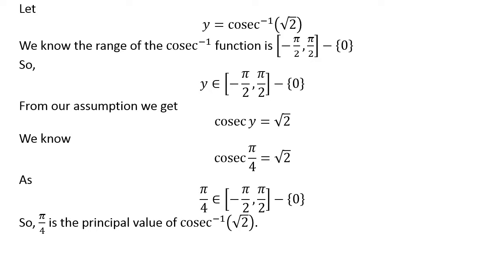So pi upon 4 is the principal value of inverse of cosecant of square root of 2.